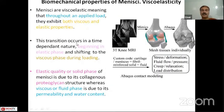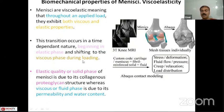Regarding biomechanical properties, the first is viscoelasticity. The menisci are considered viscoelastic, meaning that throughout an applied load they exhibit two types of properties: viscous and elastic. The transition between them is time dependent — it begins with the elastic phase and then shifts to the viscous phase while being loaded. The elastic or solid phase of the menisci is governed by the collagenous proteoglycan structure, whereas the viscous or fluid phase is due to the permeability and water content of the menisci.